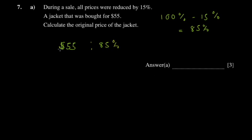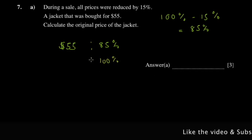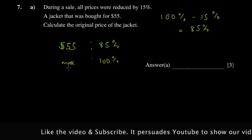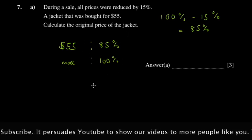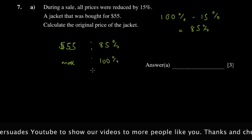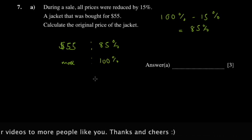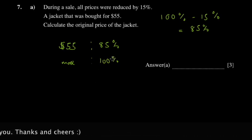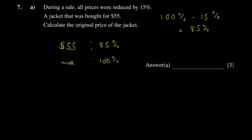$55 corresponds to 85%, and the original price of the jacket would correspond to 100%. Using simple proportion, since the percentage and value go in the same direction — if you increase the percentage you increase the value — we say 'more' here.